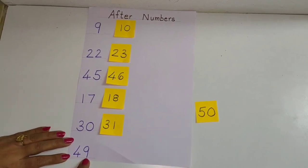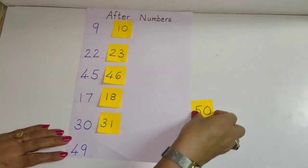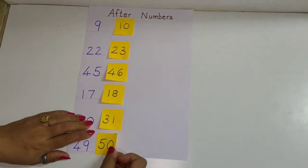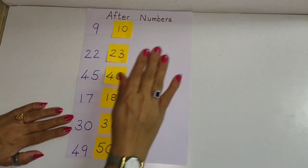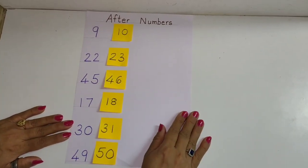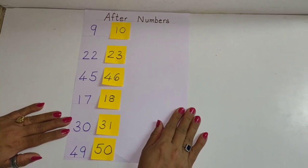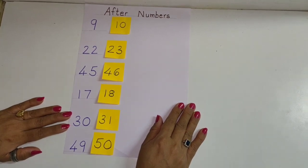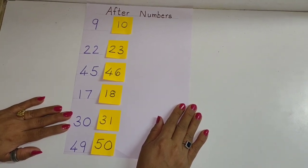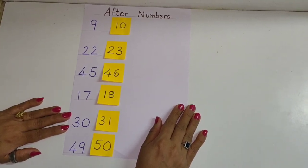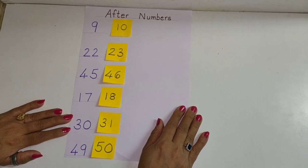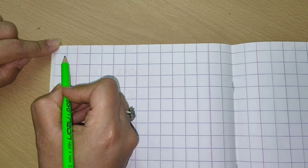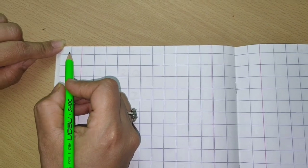And last number is 49. After 49 is 50. So this small activity you can even do it at home and practice your after numbers. Now we will do practice work in our notebook where I will make you write some after numbers and we will solve the answers.